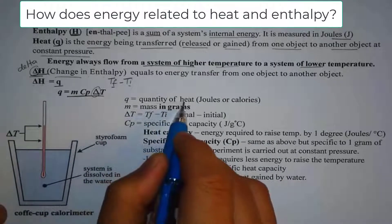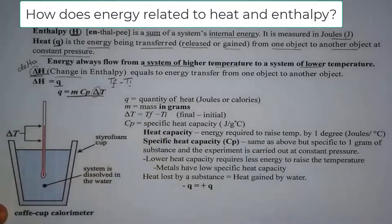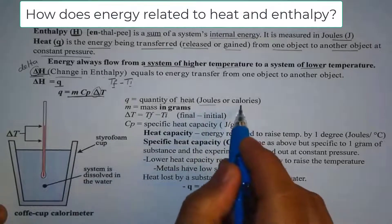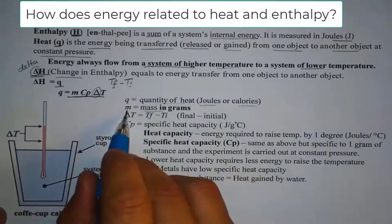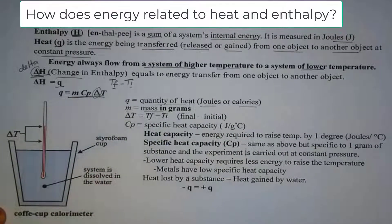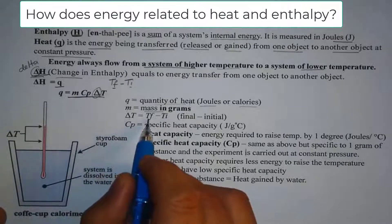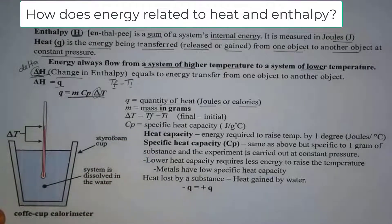Q again is the quantity of heat, the energy being transferred. And it's measured in joules or calories. While M is mass in grams. And of course, delta T is T final minus T initial. And lastly,